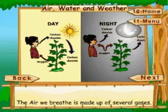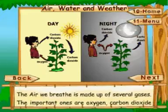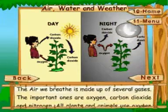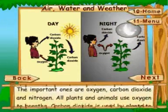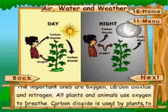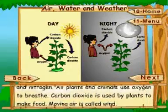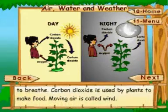Air, water, and weather. The air we breathe is made up of several gases. The important ones are oxygen, carbon dioxide, and nitrogen. All plants and animals use oxygen to breathe. Carbon dioxide is used by plants to make food.